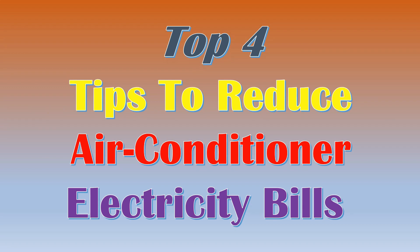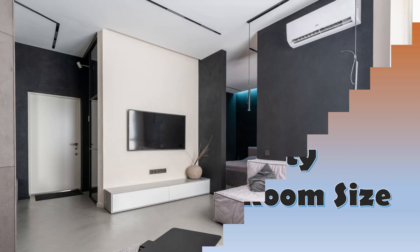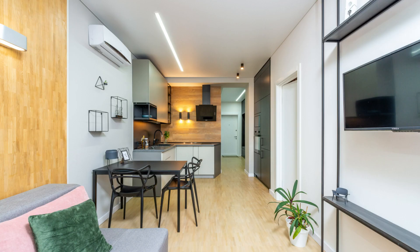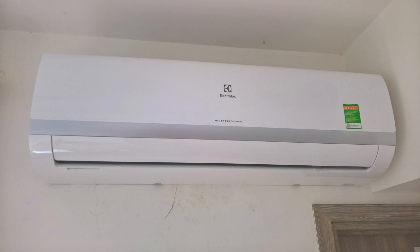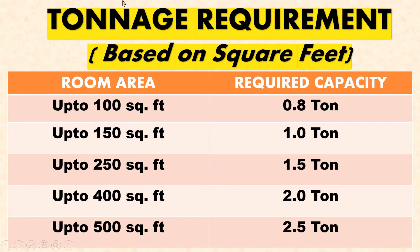We'll start with tip number 1: Install AC with capacity based on your room size. Based on the size in square feet of the room or office where you are willing to install the AC, you should select the capacity of the air conditioner. Mostly the reason for a high electricity bill is that people install a 1.5 tonne AC where only a 1 tonne AC is required. To solve this problem, I have added a table here which shows AC tonnage requirement based on room size.